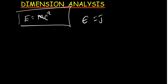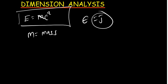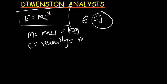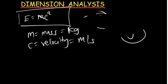We know that m is mass and c is velocity. So the units for E: when we talk of mass, the SI unit is kilograms; when we talk of velocity, the SI unit is meters per second. We are using the standard SI units for the dimensions we are dealing with. In this case for mass, we do not use grams — the standard SI unit of mass is kilograms. So I'm going to use kilograms and meters per second, and then find the units for E.